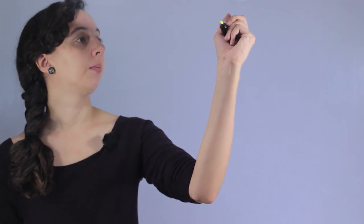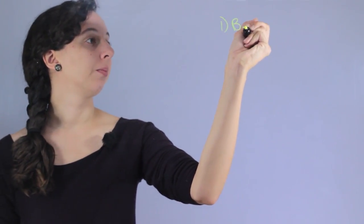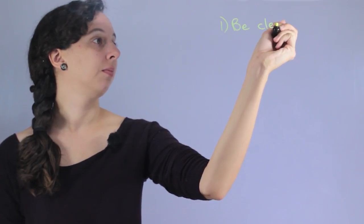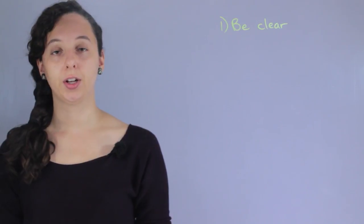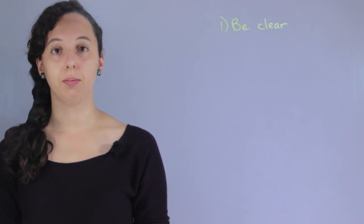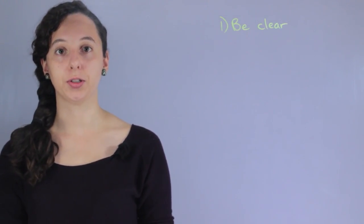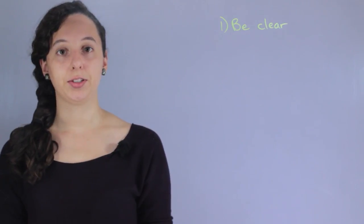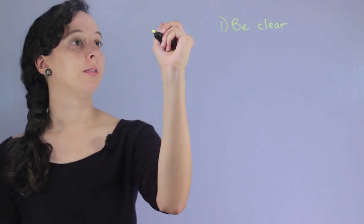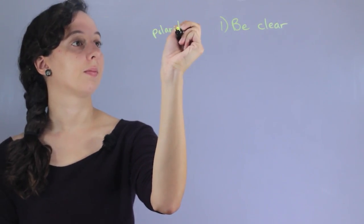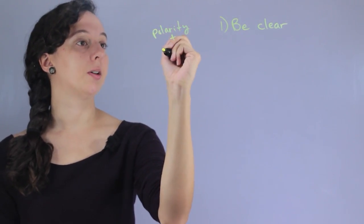Whenever I have to explain a chemistry idea or concept, there's a few things I like to keep in mind. One is be clear. You don't want to confuse someone who's learning a really difficult concept. So I always try to make things as simple as possible while still being accurate. So as an example, let's talk about polarity and solubility.